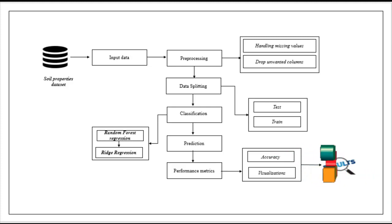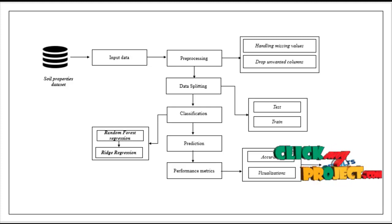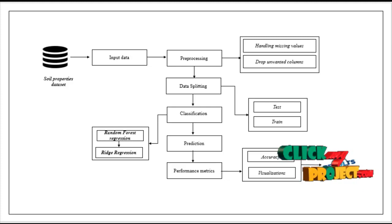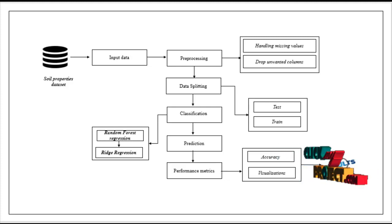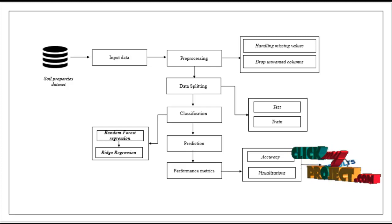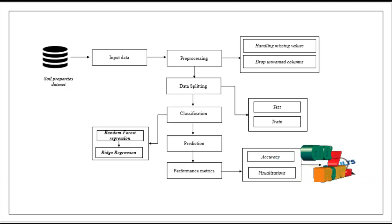The preprocessed data is carried to the data splitting module. Here we split the whole dataset into test and train. Test is used for prediction and train is used for evaluation. The data splitting is performed based on a ratio of 70:30 or 80:20.